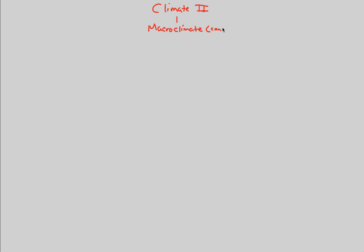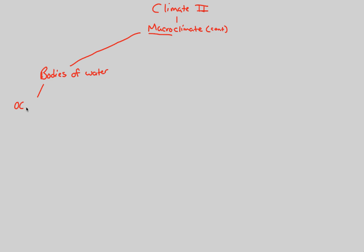This will be macroclimate, continued. First, in order to understand the large-scale climate of the Earth, we have to recognize that most of the Earth is covered in water. It's important to understand the influence that bodies of water have on the macroclimate. Specifically, when we look at bodies of water, we have to first look at the idea of ocean currents, because whenever there is land, there is going to be water somewhere nearby. Ocean currents have a great influence on the climate, and they influence climates along the coast specifically.